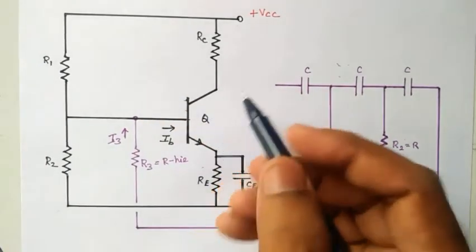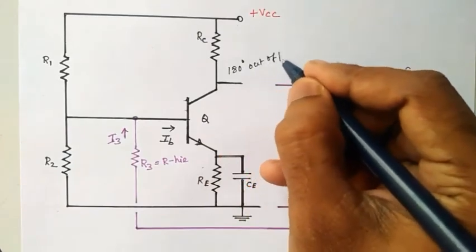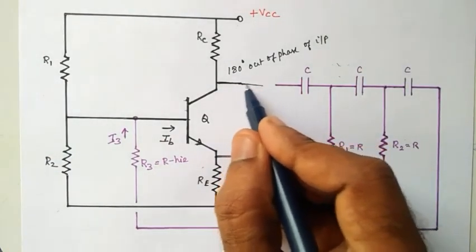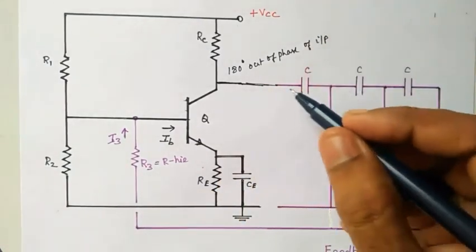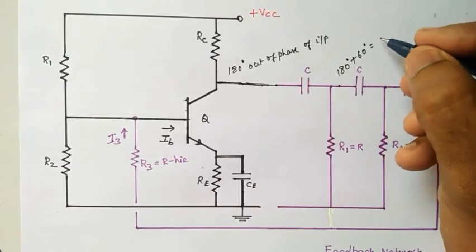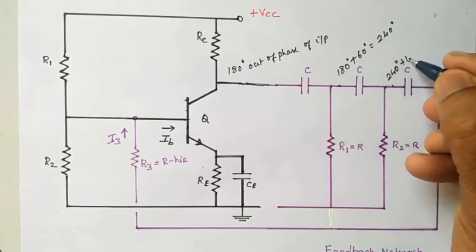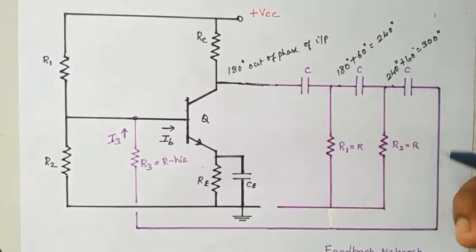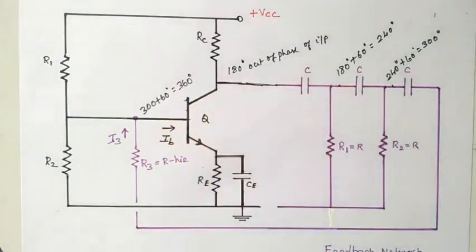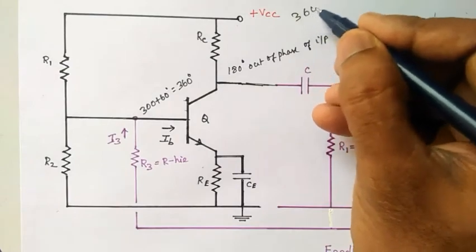In this circuit, the common emitter amplifier produces an output signal that is 180 degrees out of phase with the input signal. This signal is fed back through the feedback network, which consists of three RC networks. After crossing the first RC network, we get an additional 60 degrees — so 180 plus 60 equals 240 degrees. After crossing the second RC network, we get 240 plus 60 equals 300 degrees. Like this, the circuit satisfies the requirement of 360-degree phase shift.